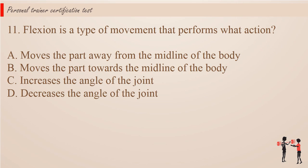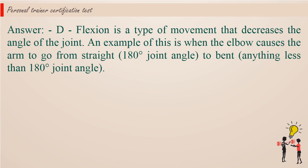Question 11. Flexion is a type of movement that performs what action? a. Moves the part away from the midline of the body. b. Moves the part towards the midline of the body. c. Increases the angle of the joint. d. Decreases the angle of the joint. Answer: d. Flexion is a type of movement that decreases the angle of the joint. An example is when the elbow causes the arm to go from straight, 180 degrees joint angle, to bent, anything less than 180 degrees joint angle.